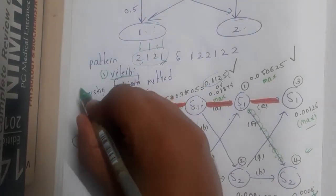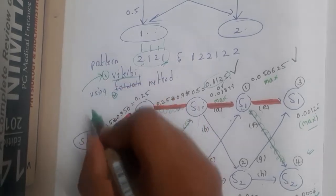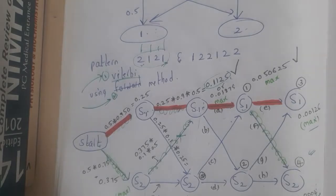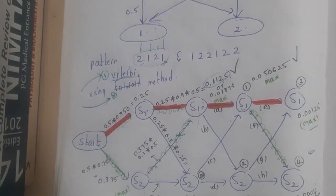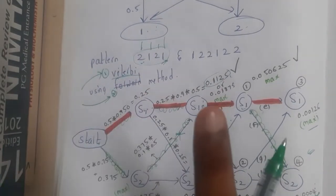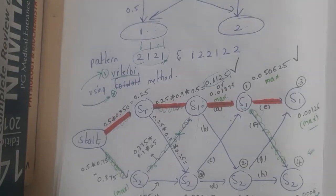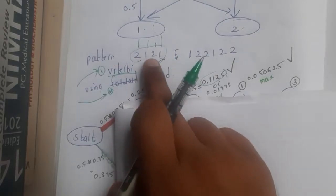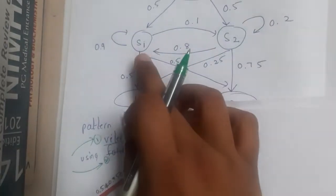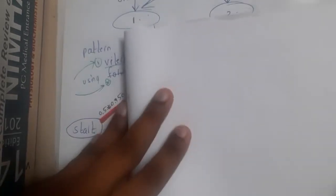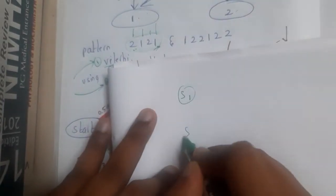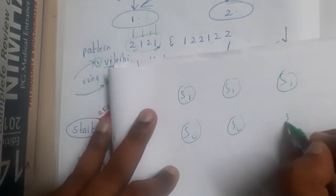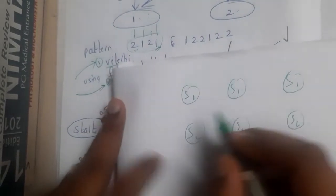Let us first understand the logic behind the Viterbi algorithm or method, and after that I'll explain the logic of the Forward method. Both logics are really easy - if you understand one, you can clearly solve the other. The first step is to draw the diagram. Here it is saying 2, 1, 2, 1 - so the hidden states are S1 and S2.